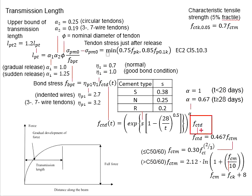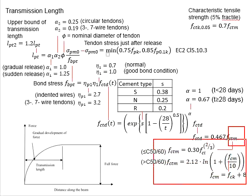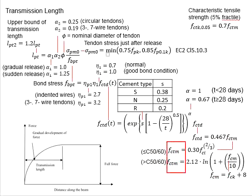f_ctd represents design concrete tensile strength, given by 0.467 times f_ctm. f_ctm can be obtained from the formula here depending on grade. You may also obtain f_ctd from Eurocode Table 3.1 EC2 Part 1. With that, you can determine transmission length.